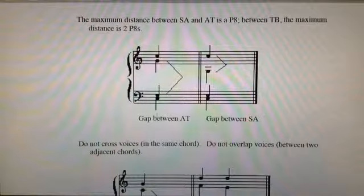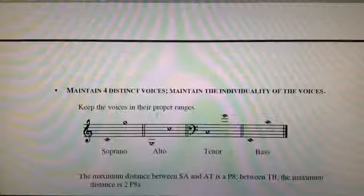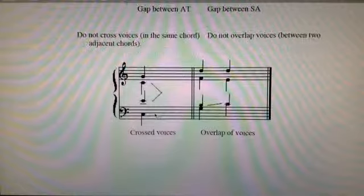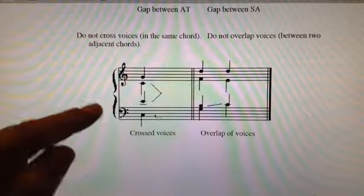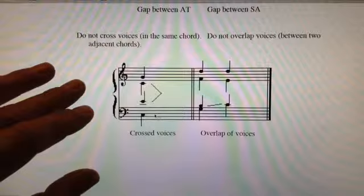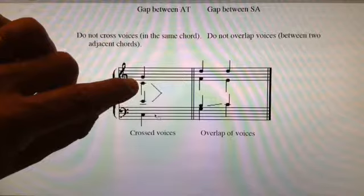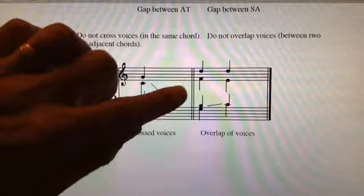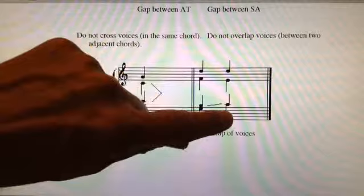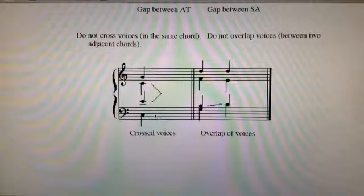This next rule, she has maximum distances. If you just remember what I told you about close and open position, that's going to be all we need to know for now. We come to crossed voices and overlapping of voices. You'll see that the alto note is down in their range below the tenor. Here with the overlapping of voices, you have the tenor and the bass both coming into that one note there.